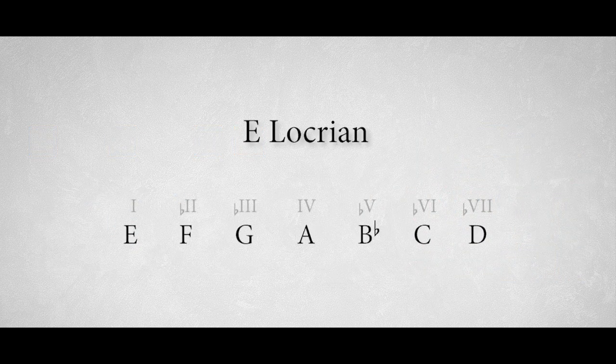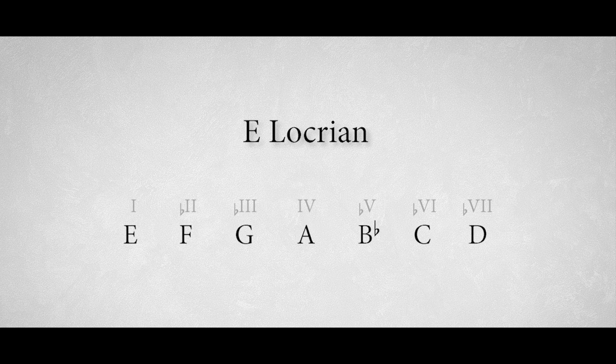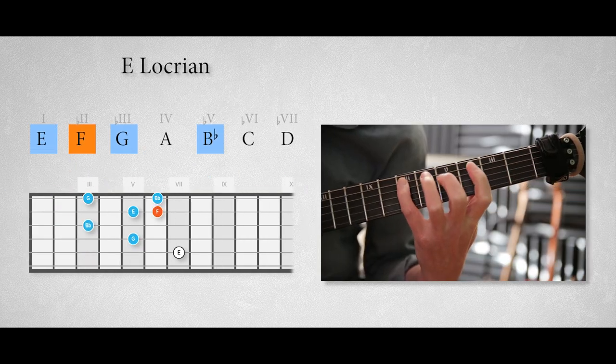To create a Locrian sounding arpeggio, we cannot use the minor or major arpeggio anymore, because the fifth degree in Locrian is a diminished note. And at the same time, the flattened second degree is also a characteristic note. So to create an E Locrian arpeggio based on a triad, we have to play the E diminished arpeggio with an addition of that flattened second degree, the note F, like this.